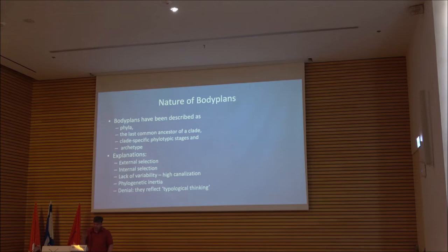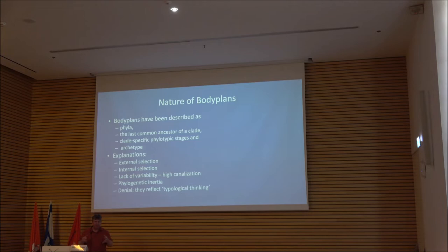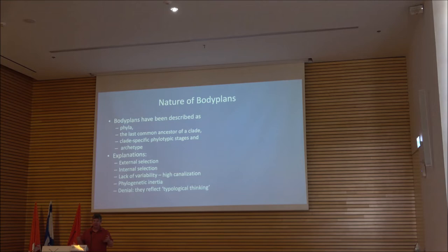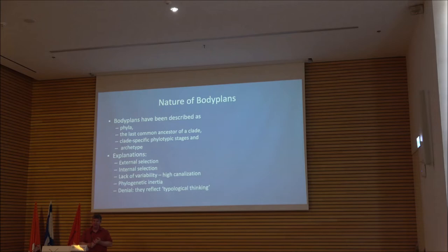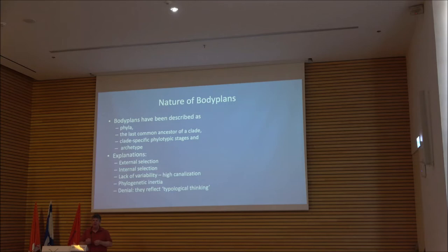Part of the problem with body plans is that they make no sense in a phylogenetic context — they're a mishmash of a variety of different features. They've been described as phyla or as architectures of phyla, but to the extent that they're real, they're not necessarily limited to phyla, because phyla are a human construct anyway. Body plans may exist at the class level or the superphylum level. They're not the same thing as the last common ancestor for the clade, nor are they the same thing as the clade-specific phylotypic stage, nor are they a modern-day example of Owen's archetype.